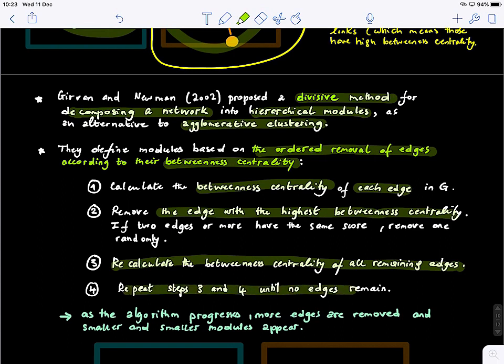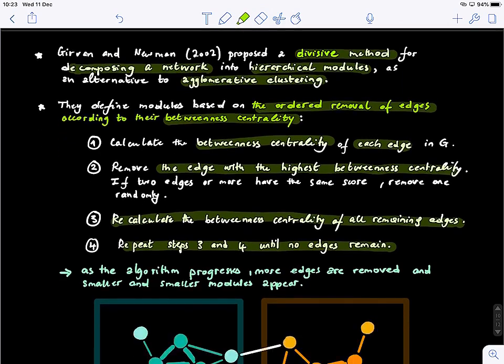And repeat step three and four until no edges remain. So as the algorithm basically progresses, you will see that you're fragmenting the graph, but also you're detecting different modularities at different multiple scales.